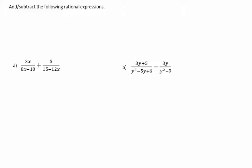Add or subtract the following rational expressions. In these rational expressions, note that the denominators can be factored. If possible, always factor all of the denominators. This will often result in a simpler common denominator.